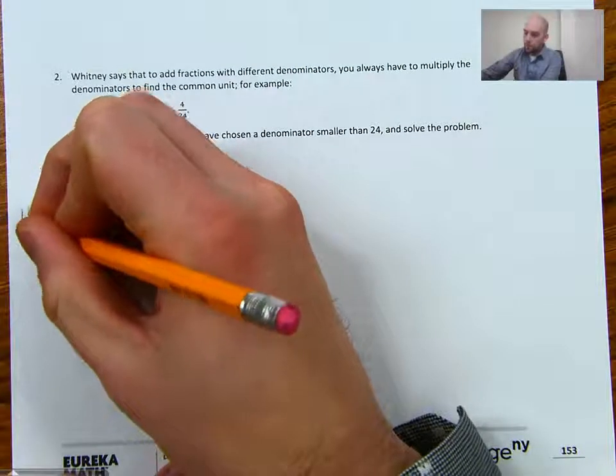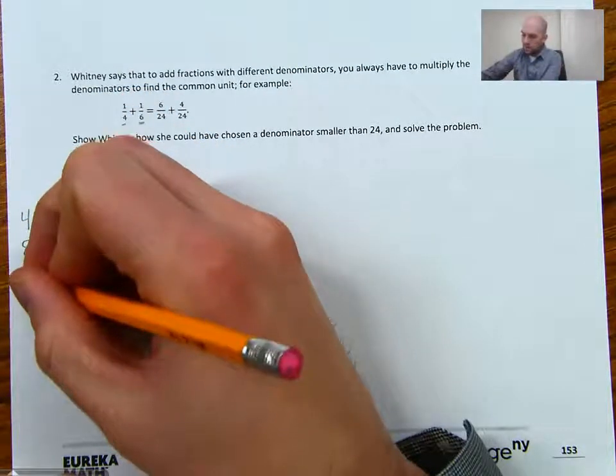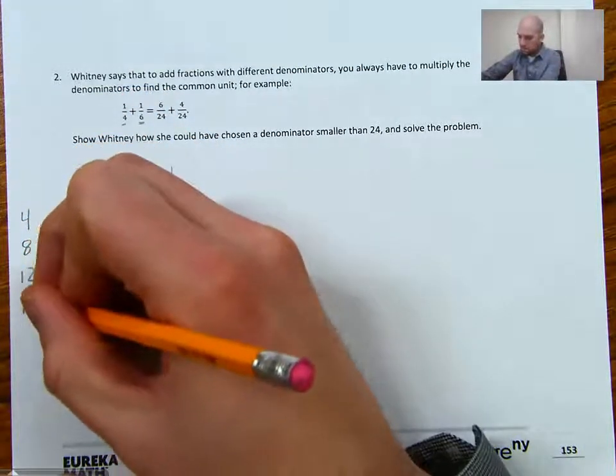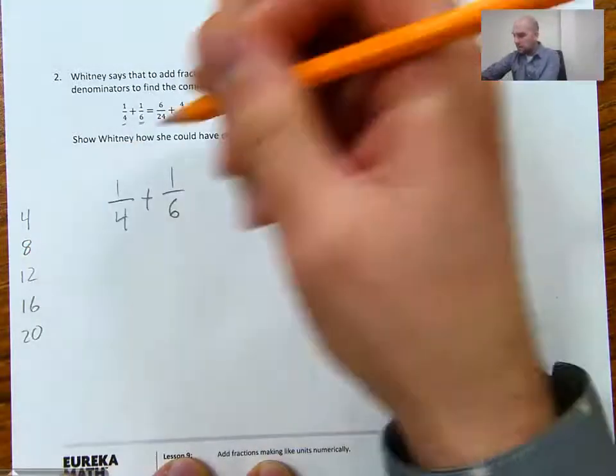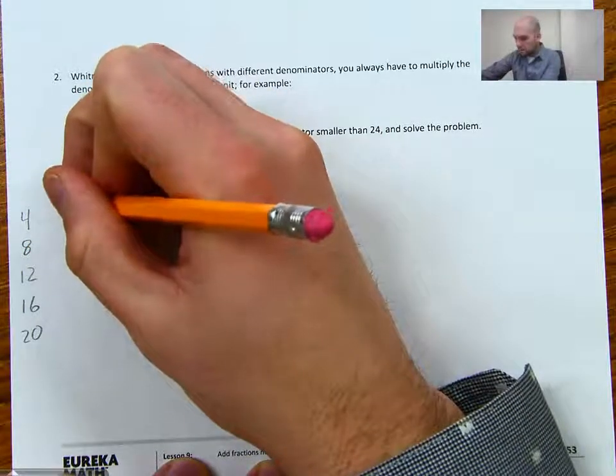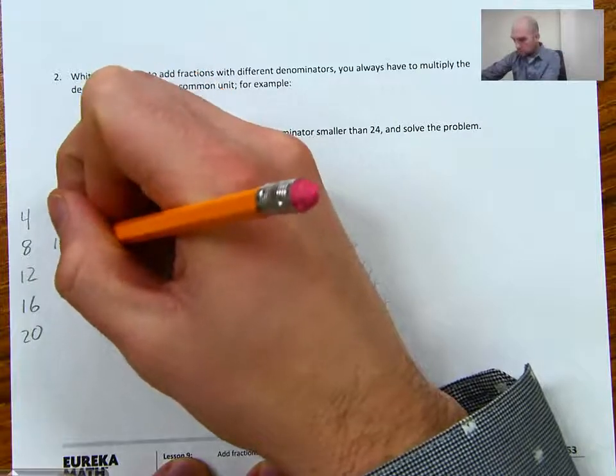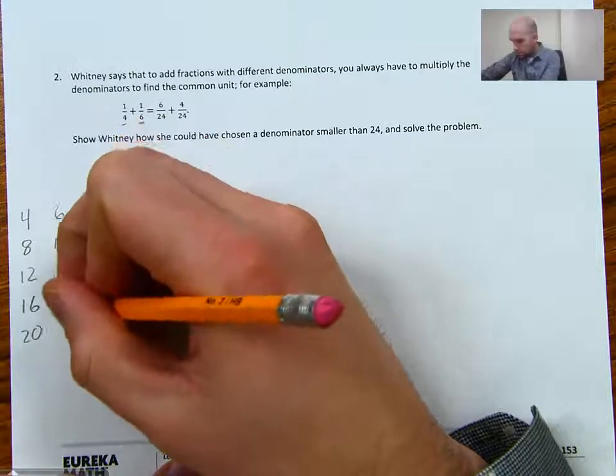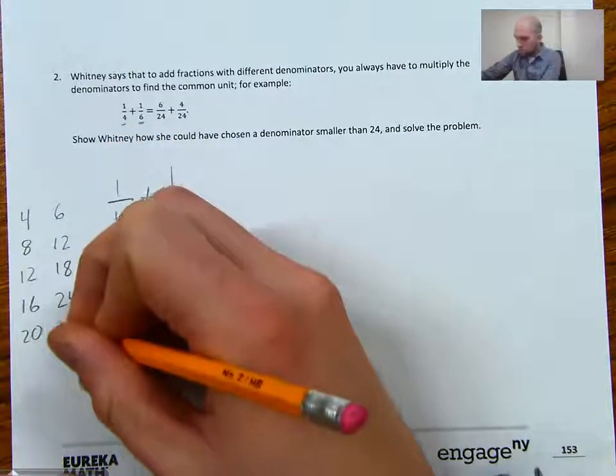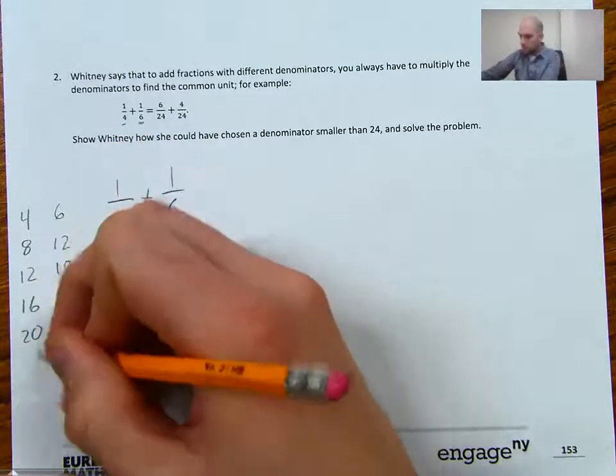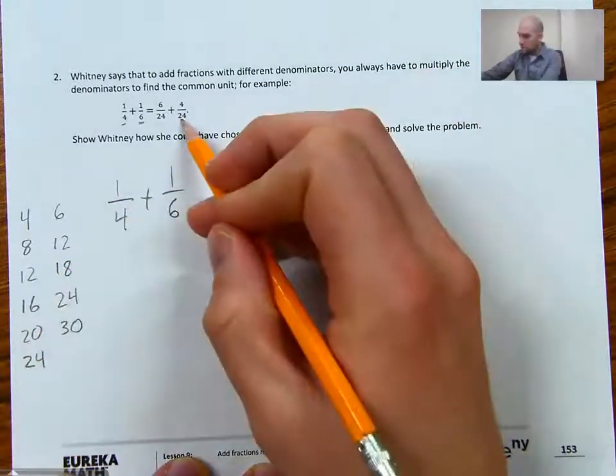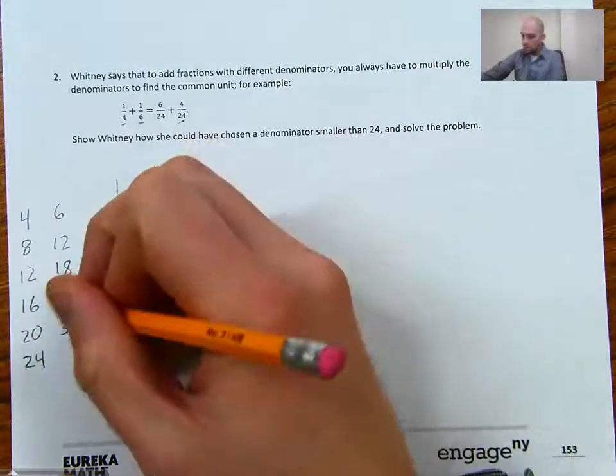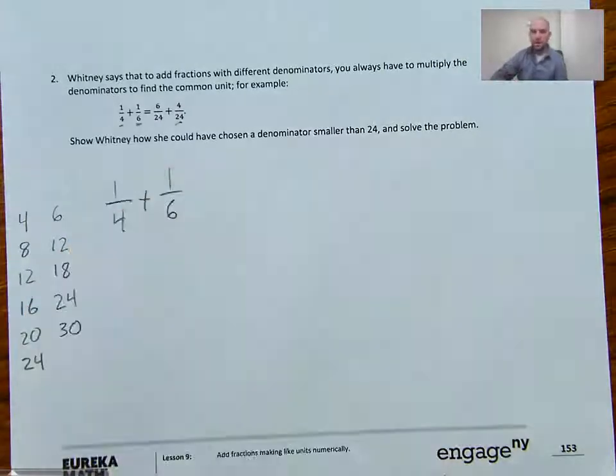So this is what we were talking about with making a number tree or skip counting. We can do our denominators are 4 and 6. So we have 1/4 plus 1/6. I can skip count by 4s. I can go 4, 8, 12, 16, 20. And then I'm going to skip count by 6s here next to it. 6, 12, 18, 24, 30. I mean, I'm going to go one more of my 4s so I can get to 24 because that's the number that she chose was 24. So I have 24. Is there any numbers that are smaller than 24 that you see that are in both factors? We could have chosen 12. That'll make it easier.